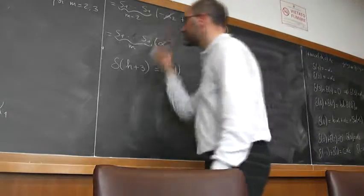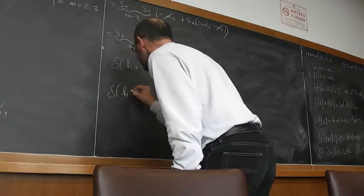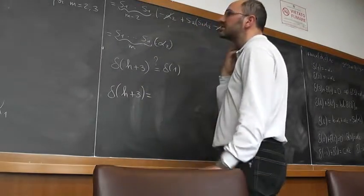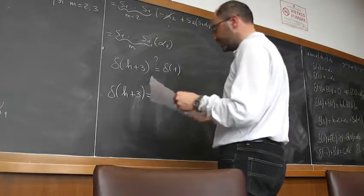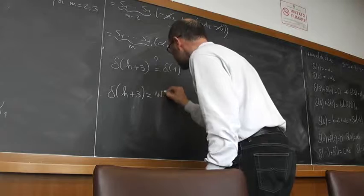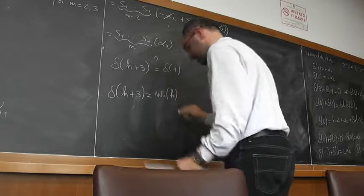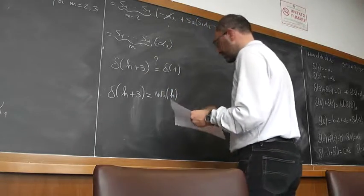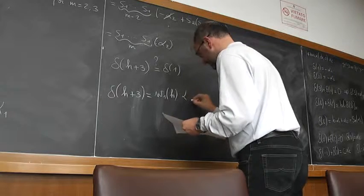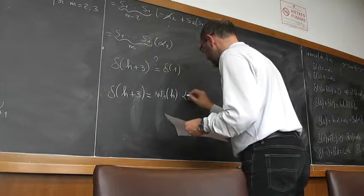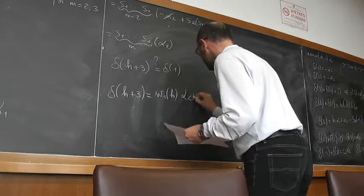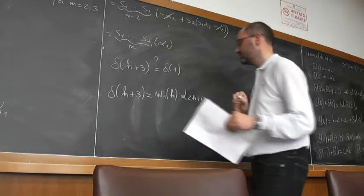So this computation still works for delta H plus 3. So this means that delta H plus 3 is W1H applied to alpha H plus 1.